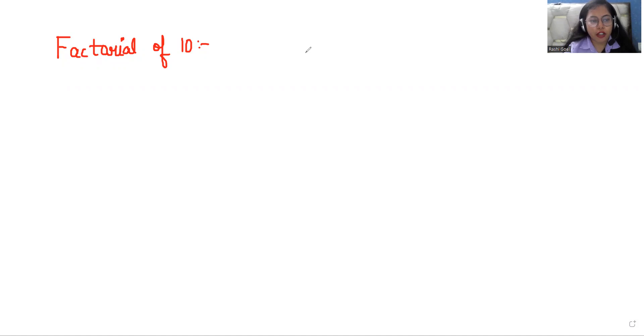Before finding the factorial, we should know what is factorial. It is an important function which is used to find how many ways things can be arranged or the order of a set of numbers.